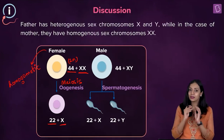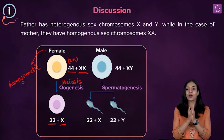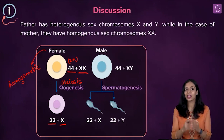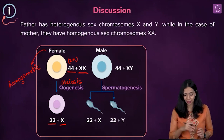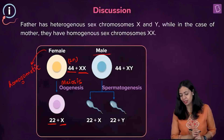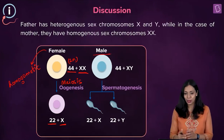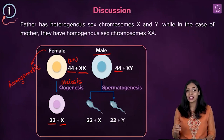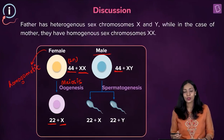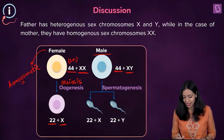Since females have sex chromosomes of the same type, they can produce only one type of gamete — which is why females are referred to as homogametic. In males, the autosome number is also 44, but they have two different types of sex chromosomes: X and Y.